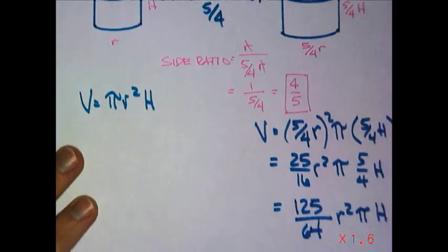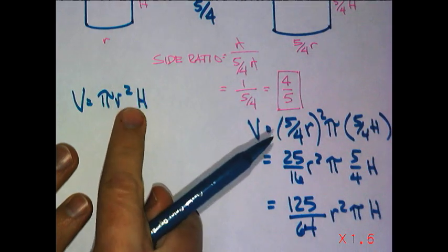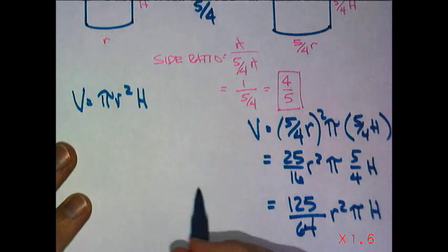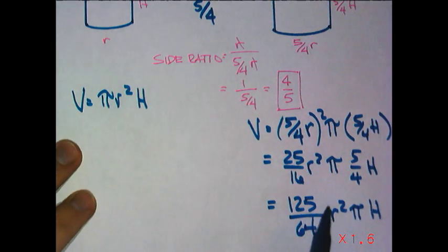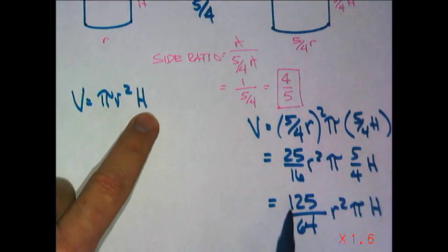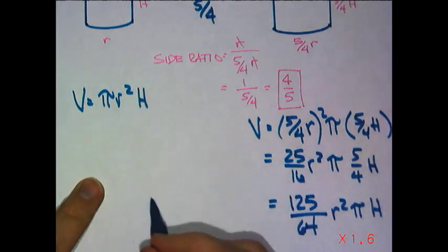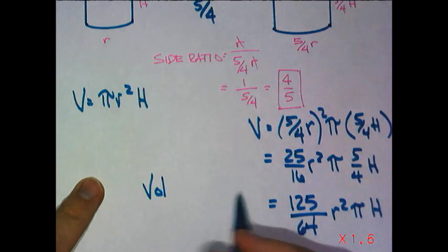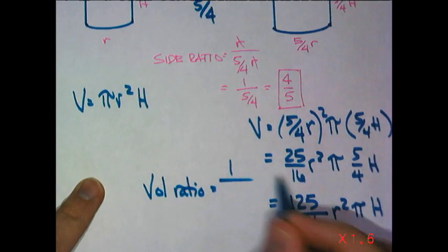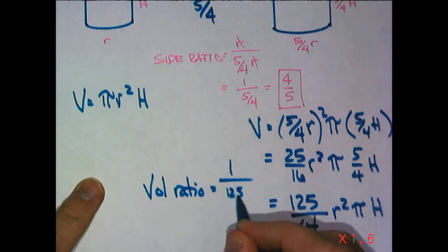And then, if we compare this one from our original to this one here, you will see that all the pi's would cancel, the r squared would cancel, the h would cancel. Leaving me with, if I'm right in the volume ratio,